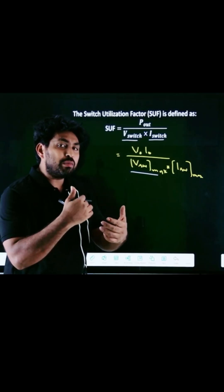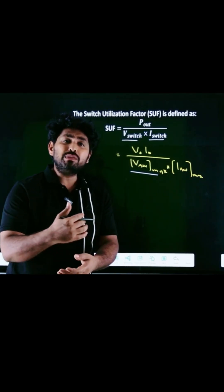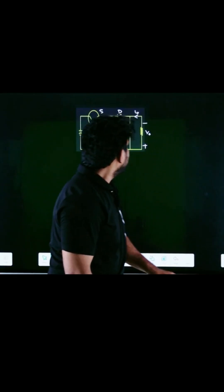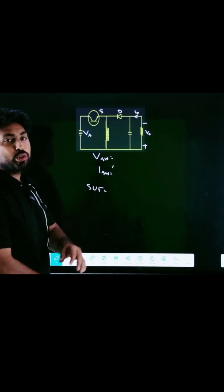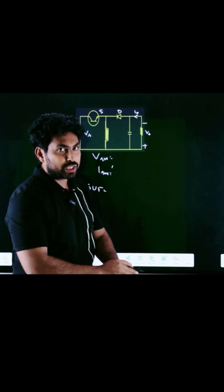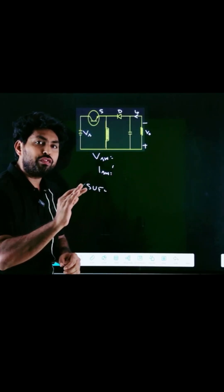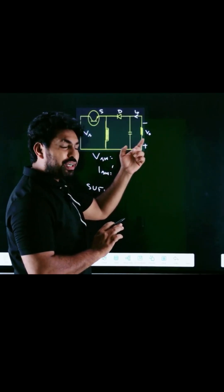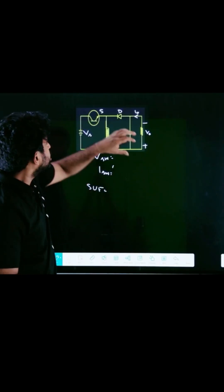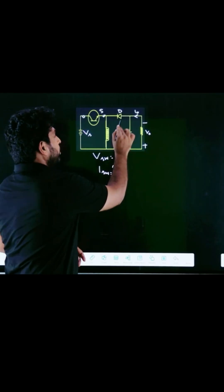The voltage across the switch during the blocking condition is the maximum voltage across the switch, and the maximum conduction current during the conduction time. In the buck-boost converter, the inductor is placed between the source and the load. To find the switch voltage, we need to open the switch and close the diode.